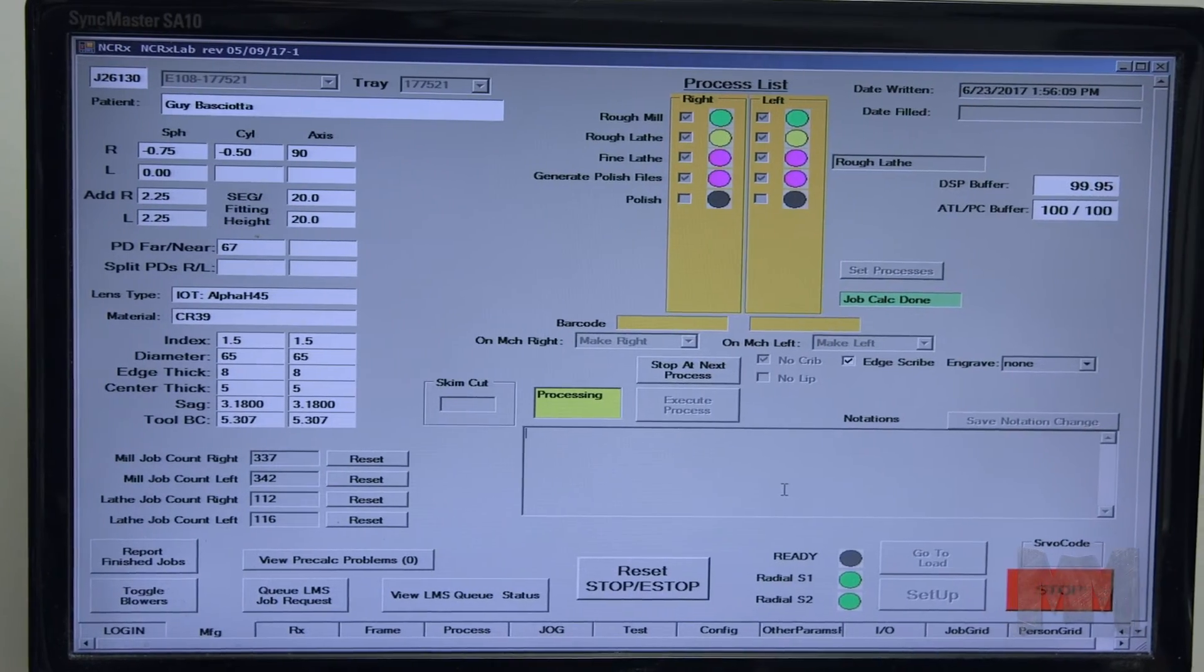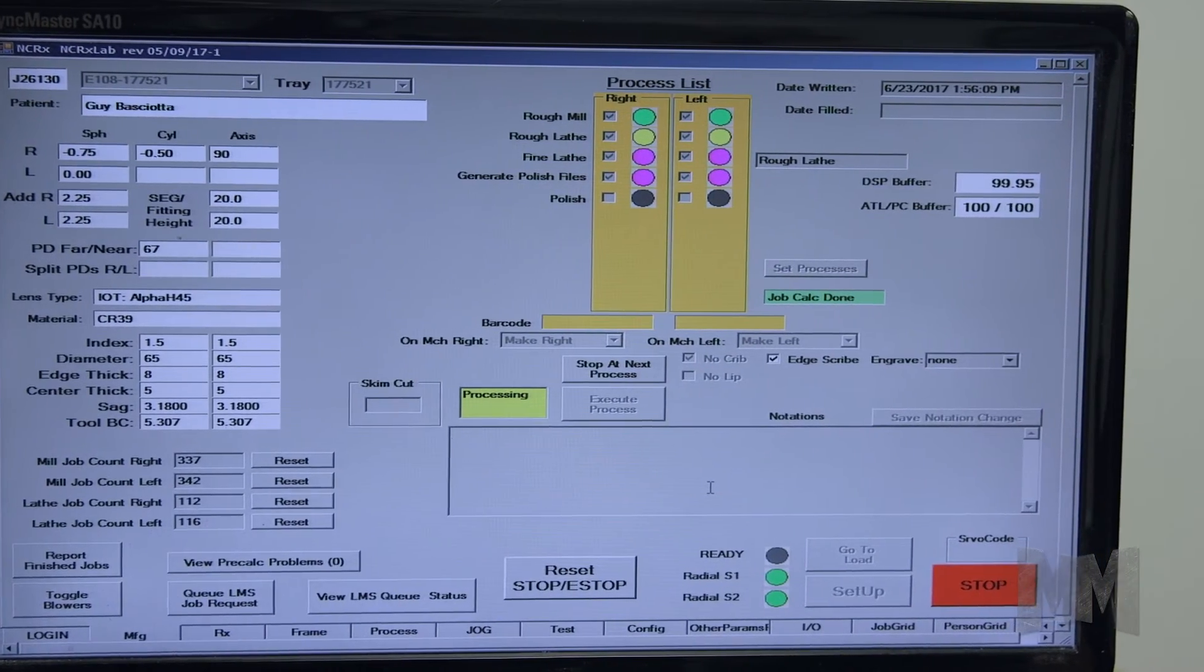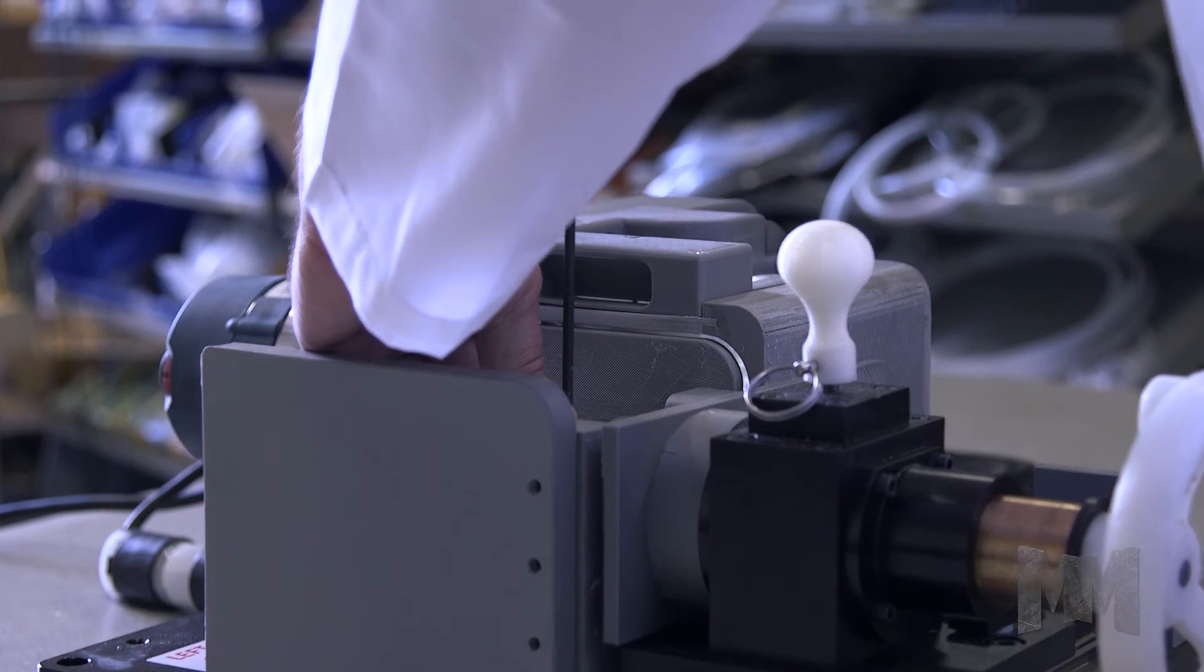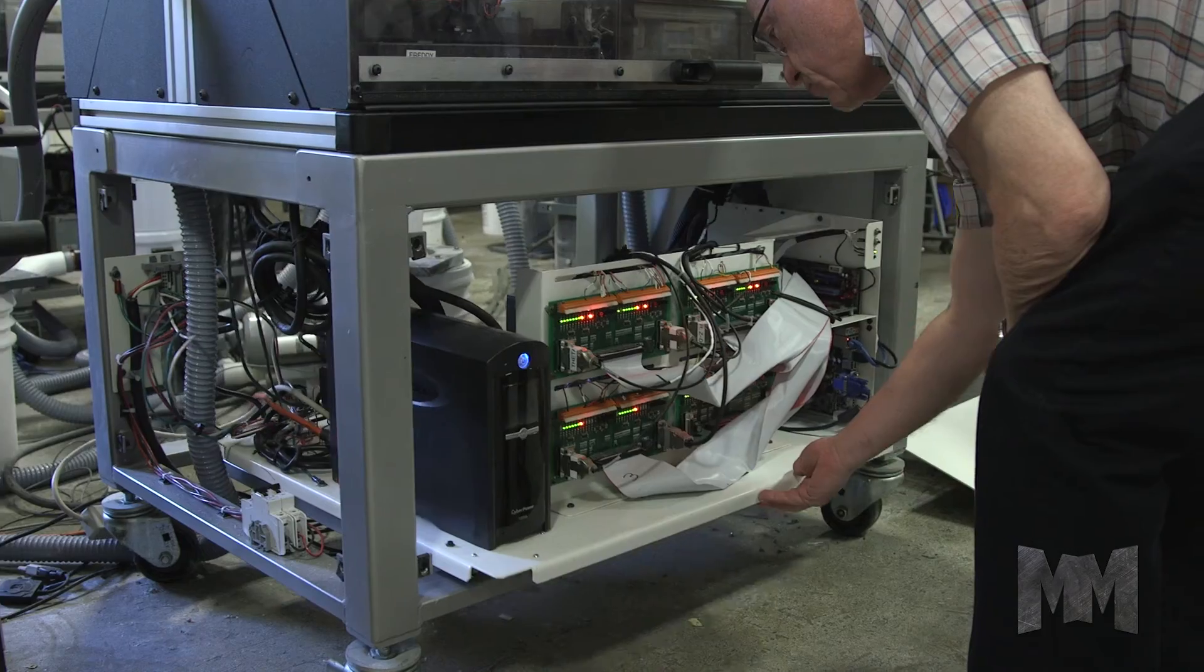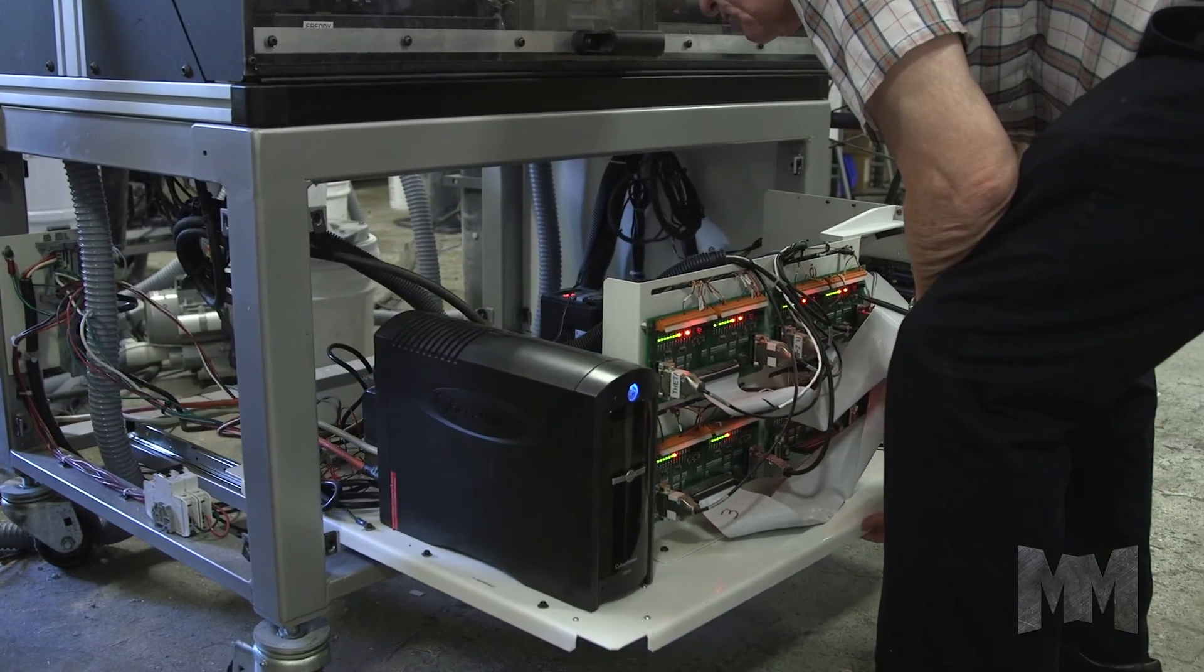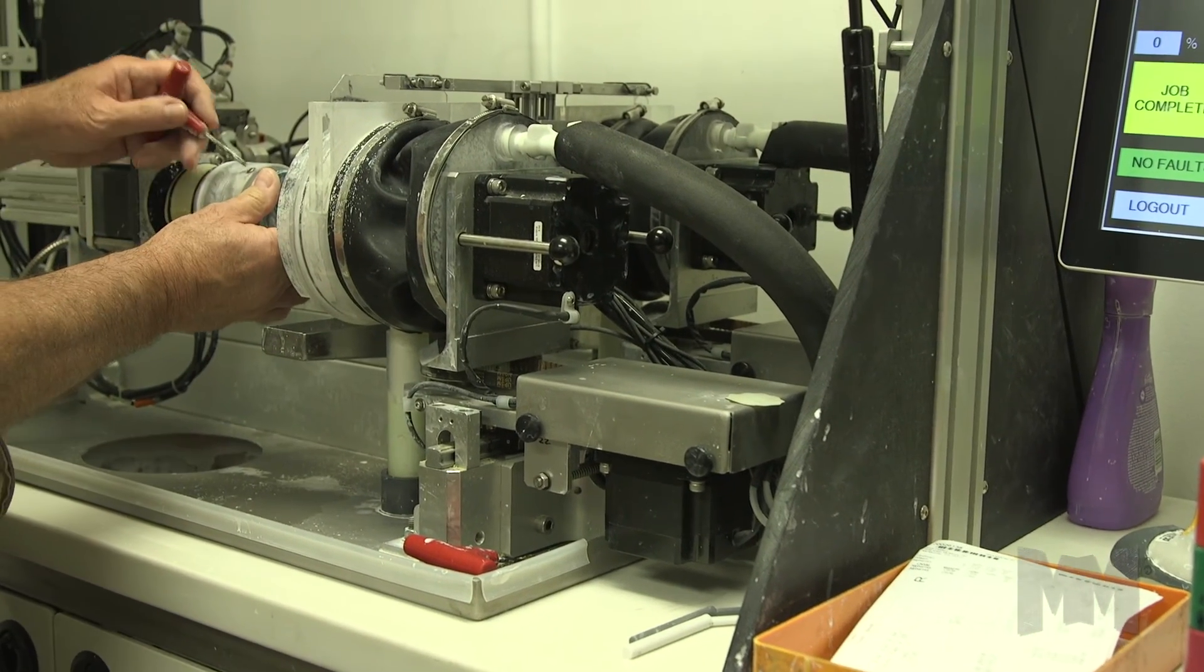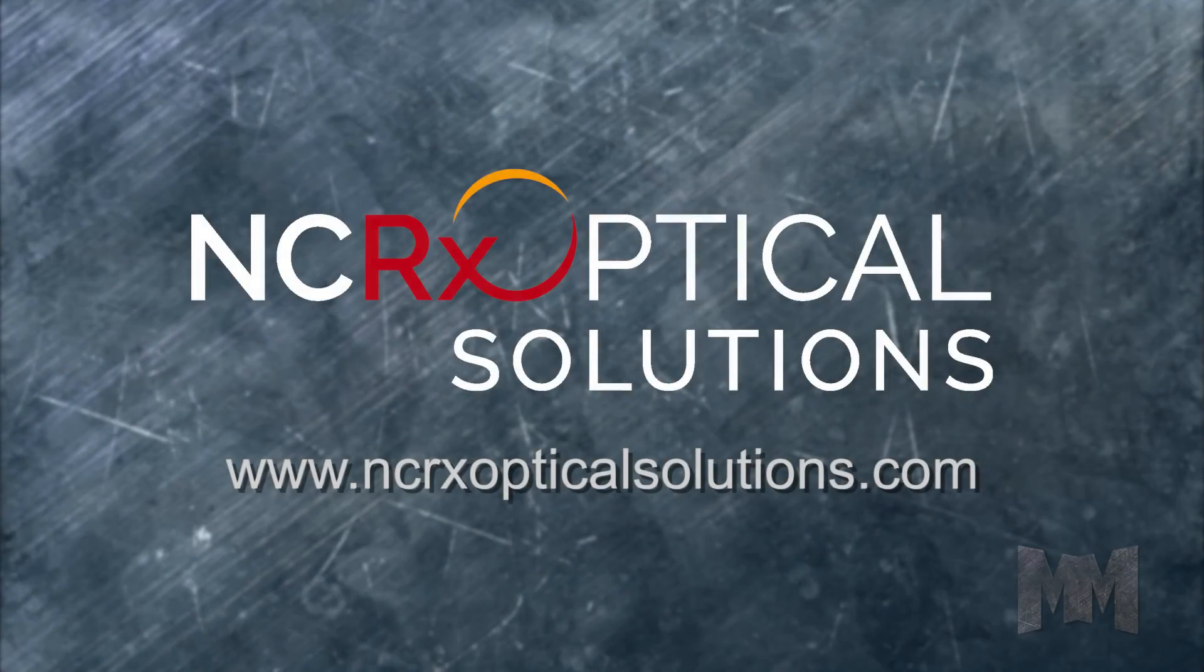Along with the capabilities and value that comes with an NCRX Lab is the regular maintenance of it. The company takes care of it all. Quarterly, fixed price, on-site maintenance is all that's recommended. Get the competitive advantage in digital lens production by visiting their website at ncrxopticalsolutions.com.